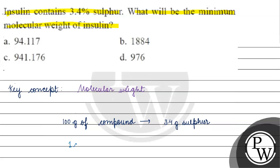1 gram of insulin, we have basically 3.4 by 100 gram of sulfur. Right?